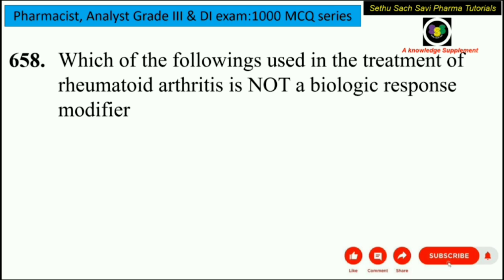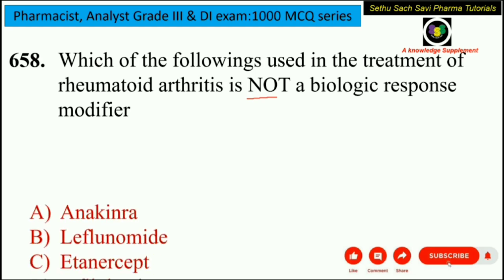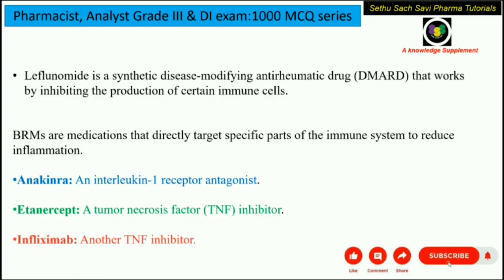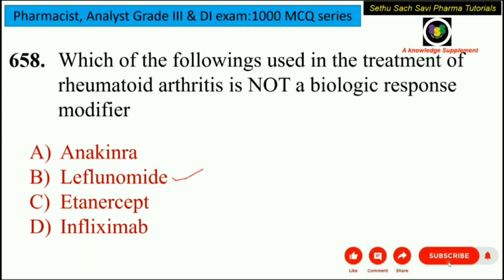Which of the following drugs used in the treatment of rheumatoid arthritis is NOT a biologic response modifier? Options are anakinra, leflunomide, etanercept, or infliximab. Leflunomide is a DMARD — a disease-modifying anti-rheumatic drug — but it is not a biologic response modifier. Anakinra is a biologic response modifier (an interleukin-1 receptor antagonist). Etanercept and infliximab are both TNF inhibitors and biologic response modifiers. So the correct answer is leflunomide.